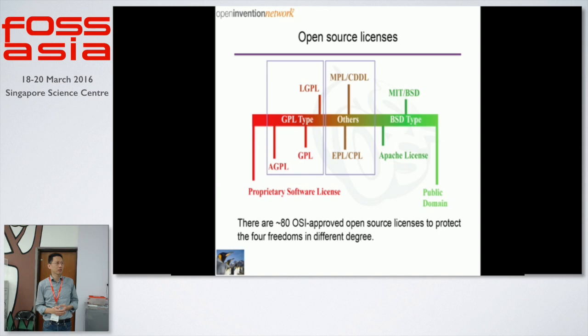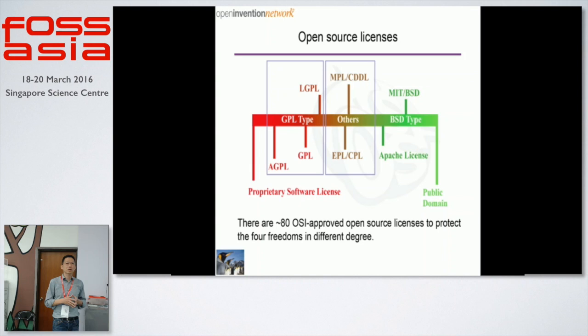If you are very copyleft-minded, you might want to use AGPL, GPL, or LGPL. Or if you are more open, MIT, BSD, or Apache, or something in between. There are many ways to contribute your work. I would suggest any developer: if you really want to use open source, you should read the license before you use the code. Otherwise, at the end, you might end up with something you don't like.